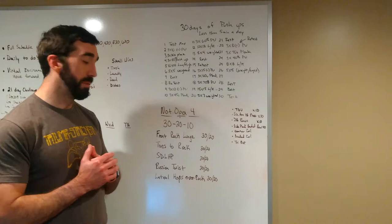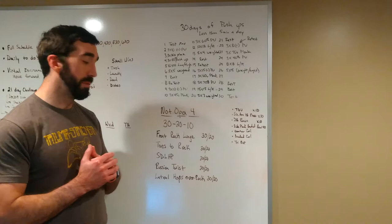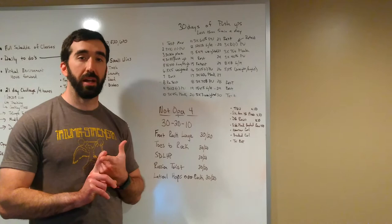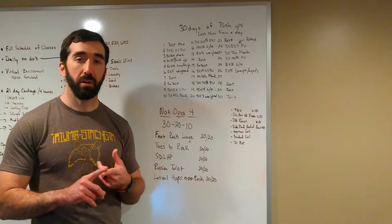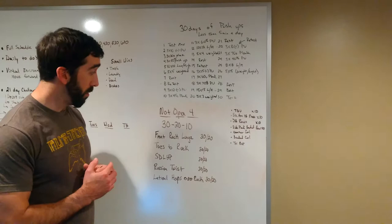Tomorrow we need some type of rucksack, so call it a book bag, any variation bag. If you don't have that you can obviously use a kettlebell or a dumbbell, something like that, odd object. What we're looking at is 30 reps, 20 reps, and then 10 reps of each of the following movements.